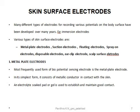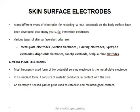In order to overcome these disadvantages, body surface or skin surface electrodes were developed. These are of different types: metal plate electrode, suction electrode, floating electrode, spray-on electrode, disposable electrode, air clip electrode, and scraped surface electrode. Now let us learn about each of them briefly.